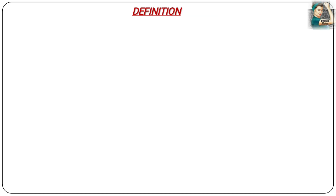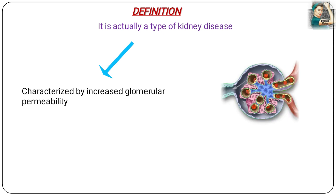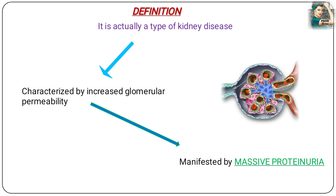When we see the definition of nephrotic syndrome, it says that it is a type of kidney disease which is characterized by increased glomerular permeability. The glomerulus is a tuft of capillaries which lies in the head of the nephron, and it is the part which filters out waste materials from the blood into the urine. But in nephrotic syndrome, the permeability of the glomerulus is increased. Due to this increased permeability, the glomerulus allows other materials to filter out also, like blood proteins, which results in massive proteinuria — the presence of large amounts of proteins in the urine.